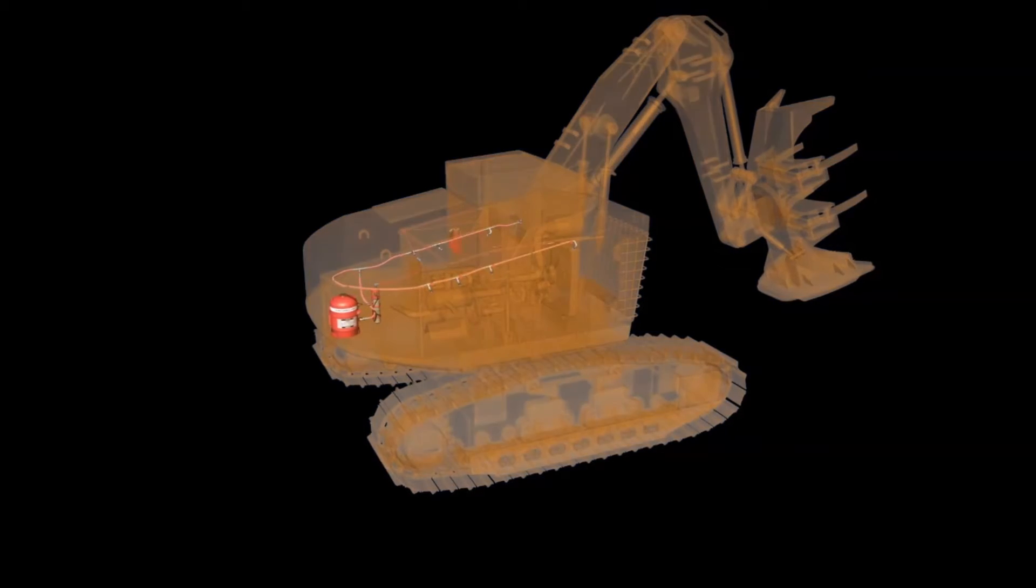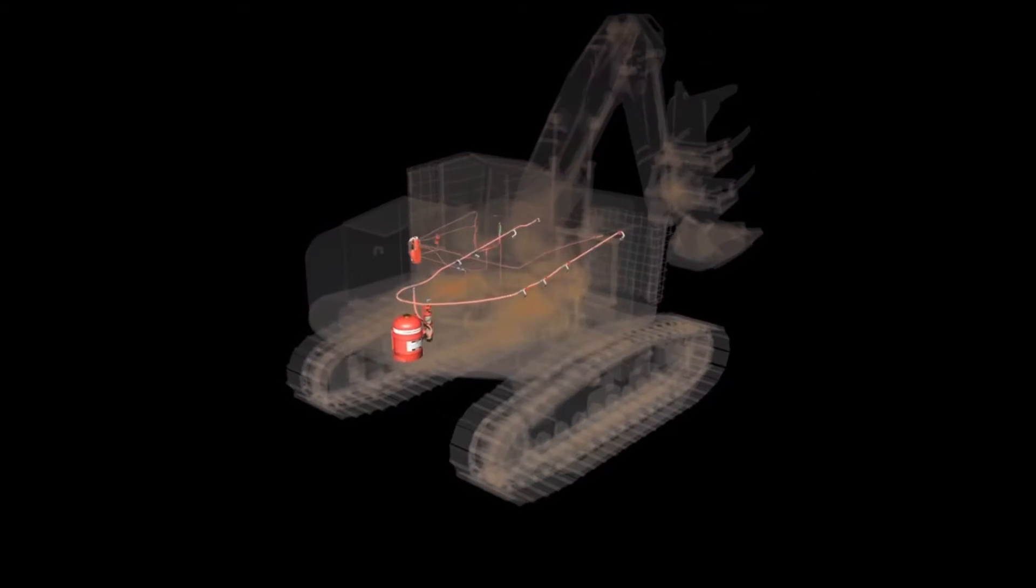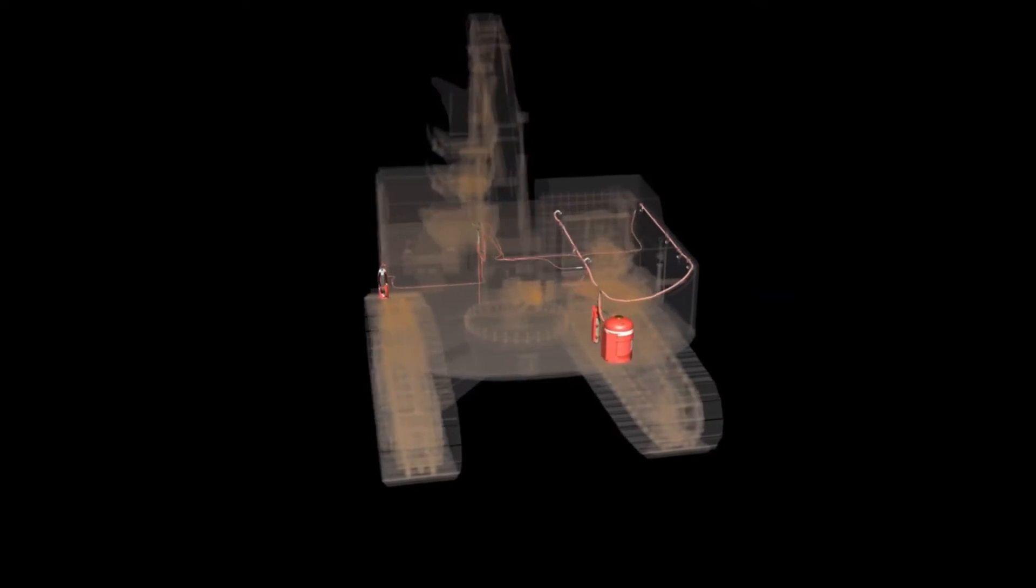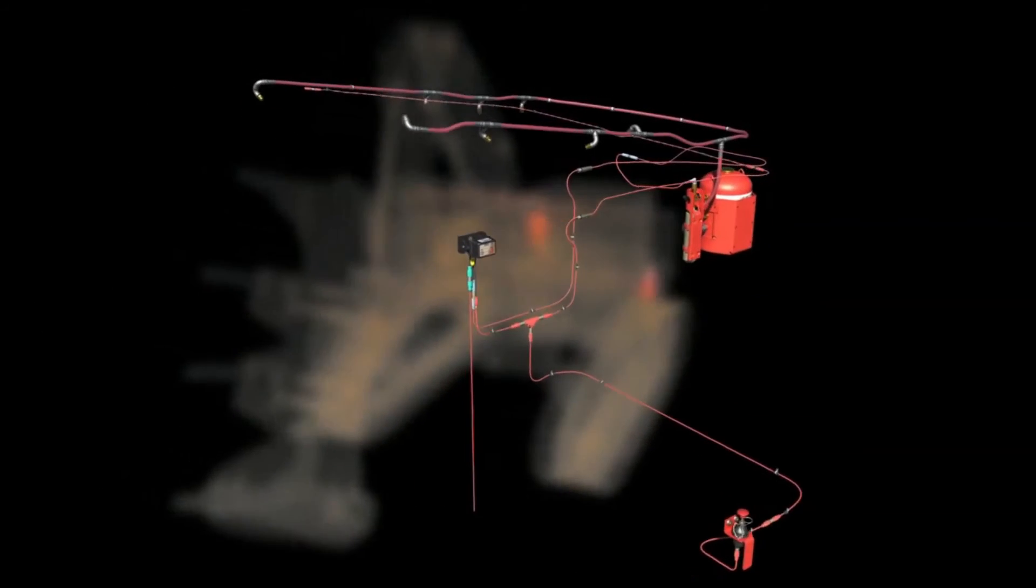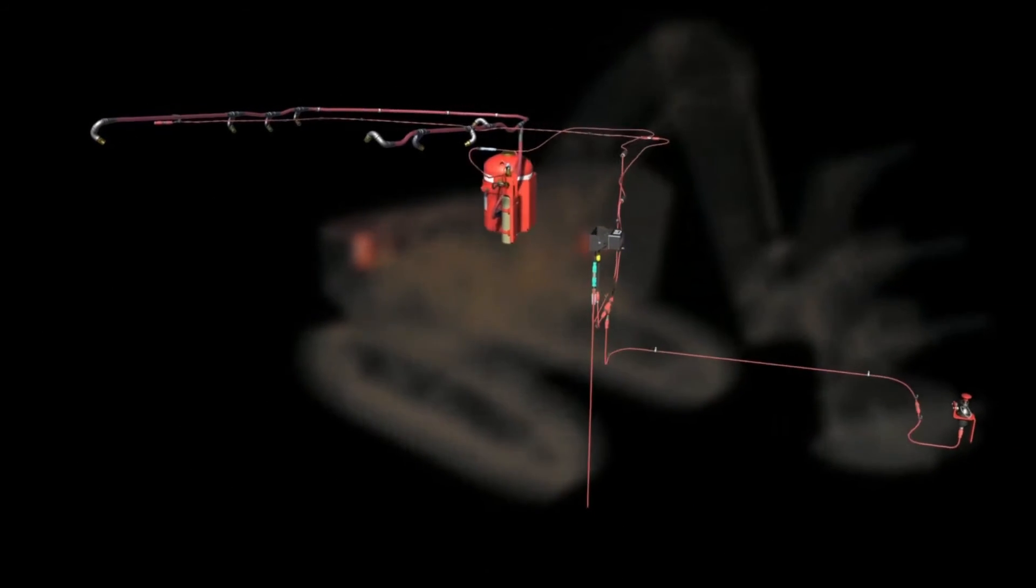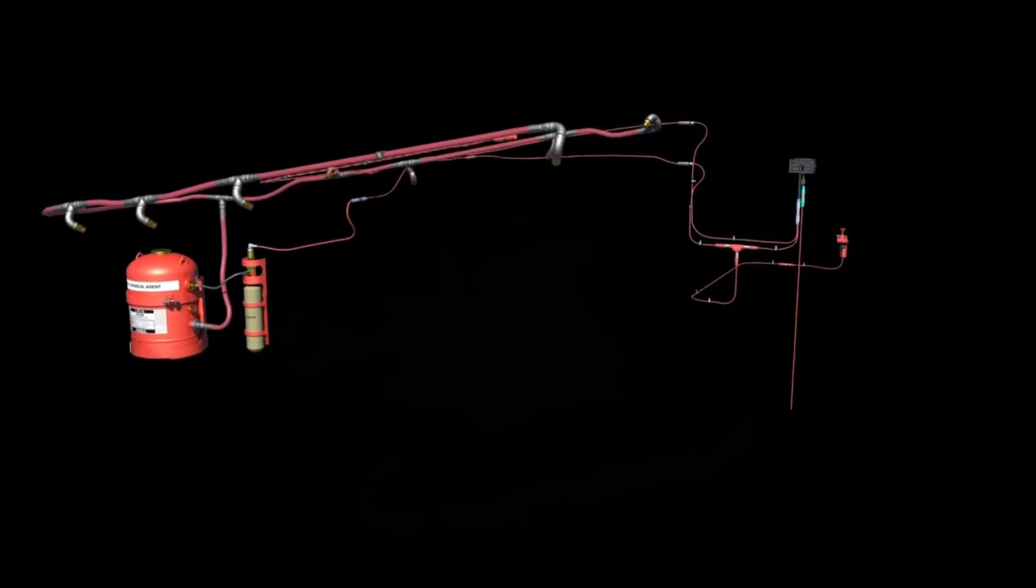The CheckFire 110 system provides outstanding first-line defense from detection to actuation by utilizing fully supervised circuits. Then the Ansel LVS fire suppression system delivers a 1-2 knockout punch with fire suppression and cooling.